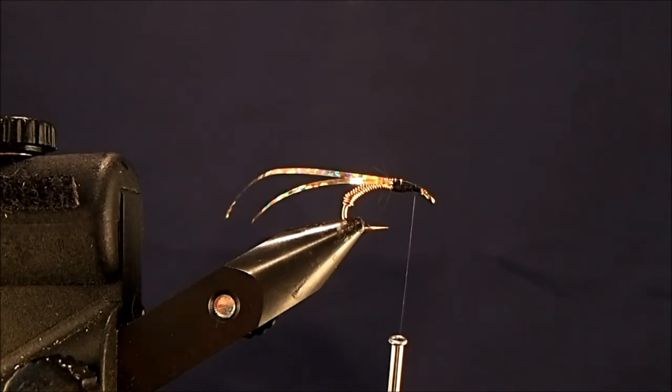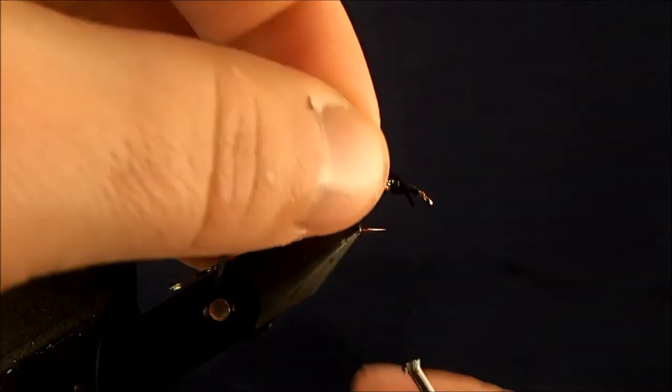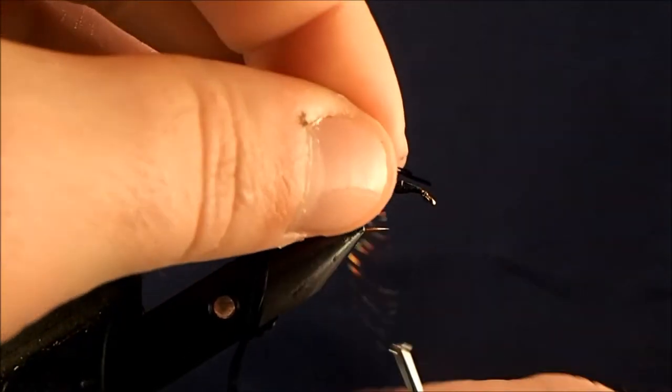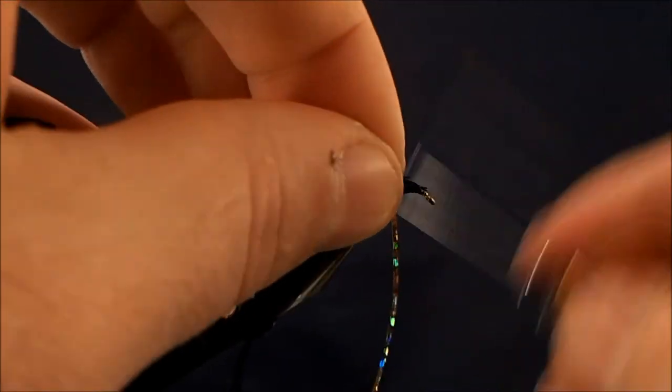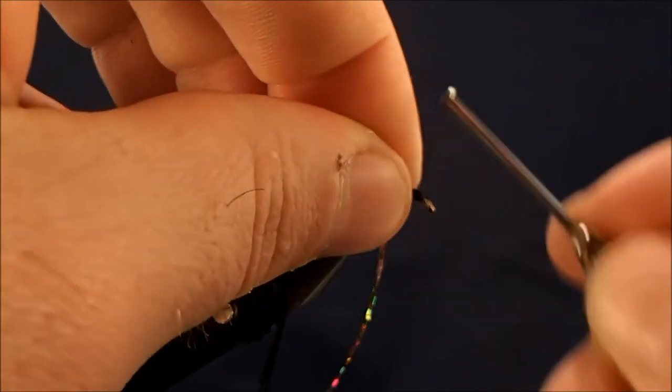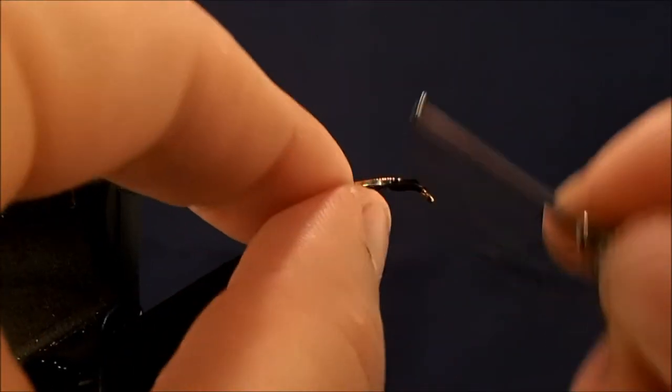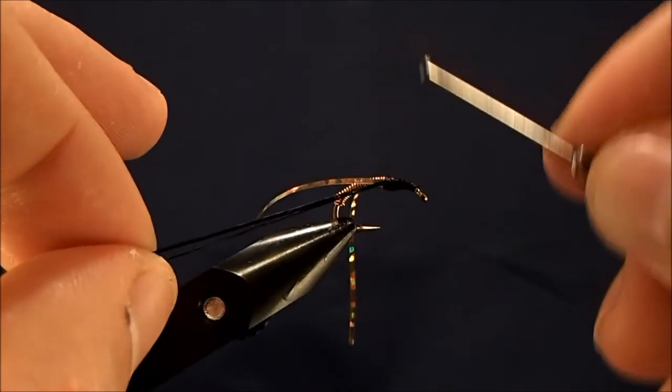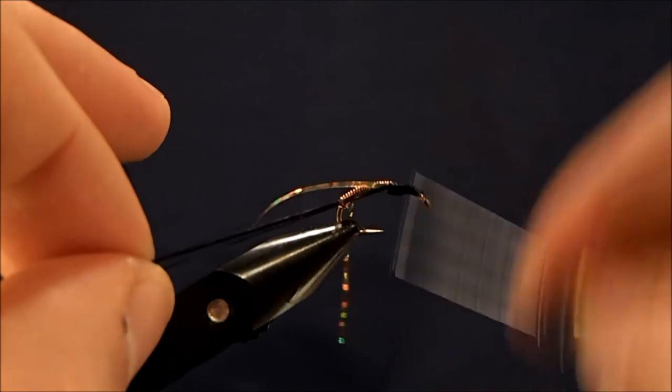I found that if you wet the floss, it binds them together so they're not so scraggly on the ends. So I'll tie that in all the way back.